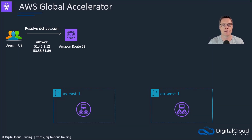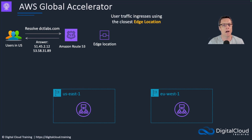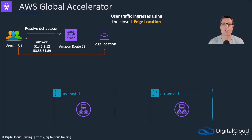These are two static public IP addresses, and they are called anycast IP addresses — more on that in a moment. The user traffic is going to ingress using the closest edge location. Global Accelerator is utilizing the Amazon CloudFront network of edge locations, and there are hundreds of those around the world.